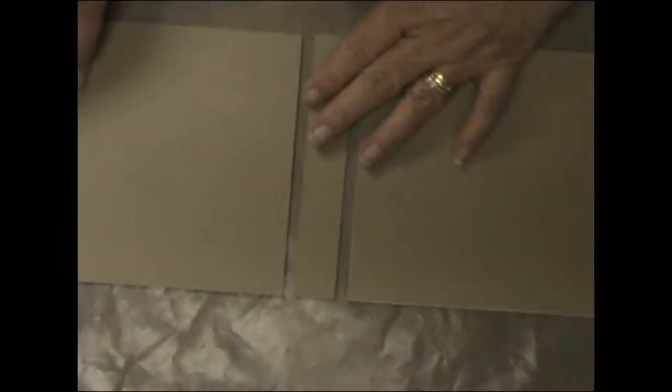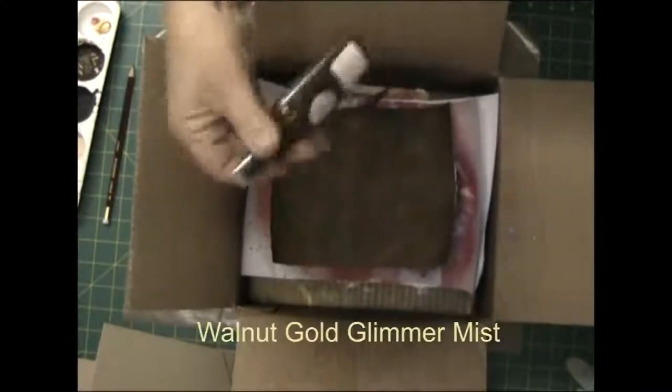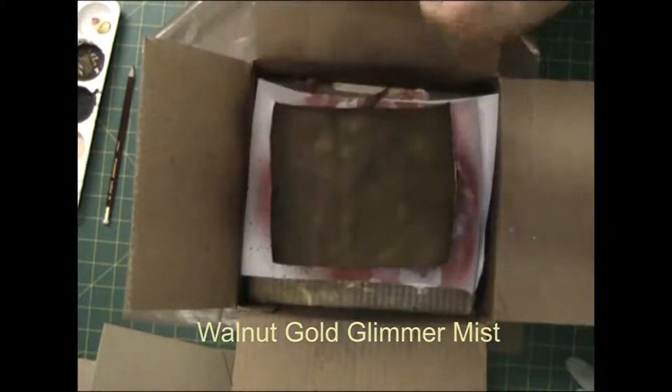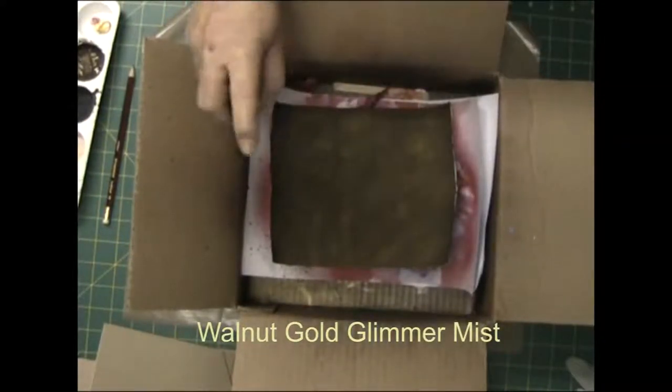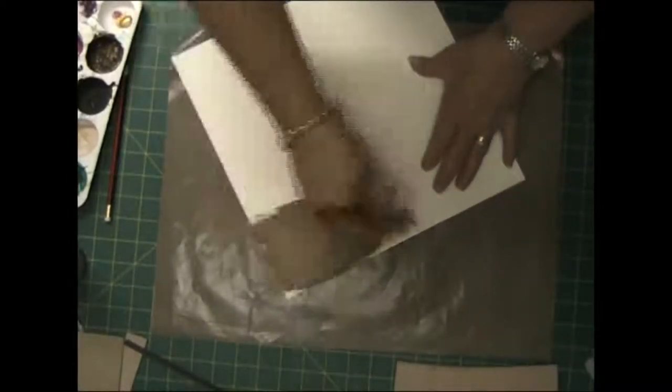This is how the cover is going to be put together, there are the chipboard pieces. Now taking some gold walnut gold glimmer mist and spraying randomly over that piece of canvas and setting it aside to dry until I'm ready to use it.